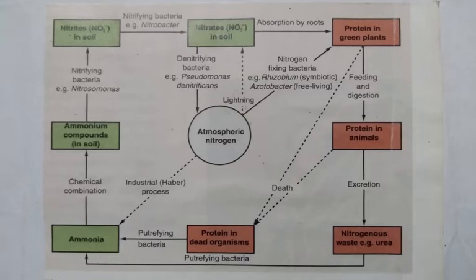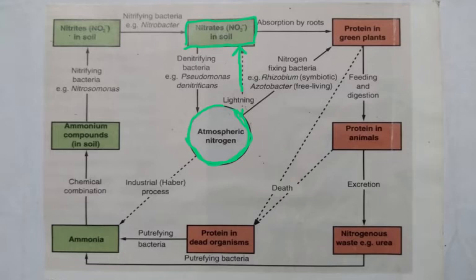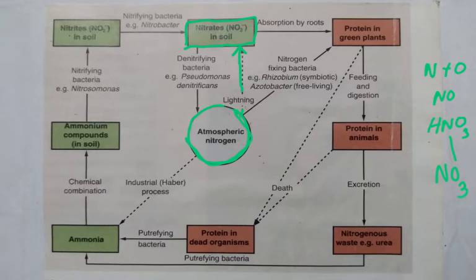Now we come to the nitrogen cycle, which is very important and complicated, so we will go through it slowly. This is atmospheric nitrogen — it is no use to us directly because we can't use it; it can only be used in the form of nitrates in the soil. There is only one arrow which converts atmospheric nitrogen directly to nitrates, and that is lightning. Lightning — L-I-G-H-T-N-I-N-G, not 'lighting.' During lightning, nitrogen and oxygen in the air combine via the electrical current, forming nitrous oxide, then HNO3 (nitric acid), and then nitrates dissolve into the soil.